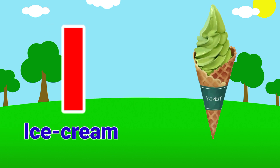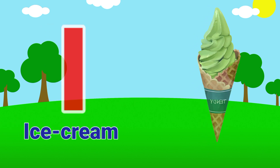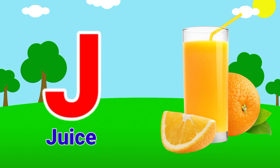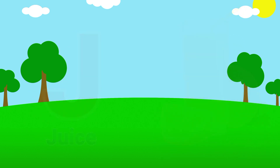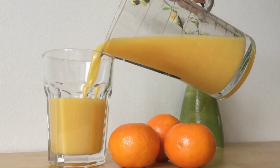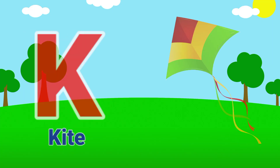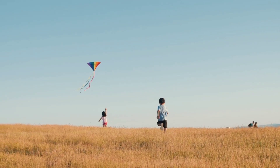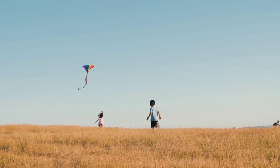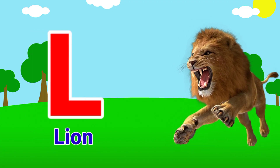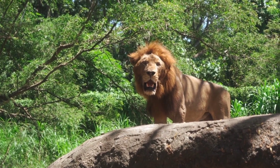I. I for ice cream. Ice cream. J. J for juice. Juice. K. K for kite. Kite. L. L for lion. Lion.